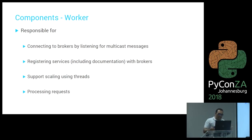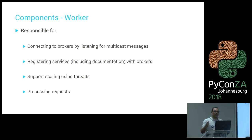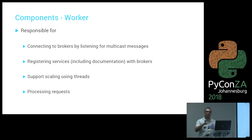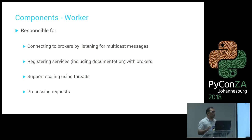We run on AWS and want to do auto-scaling and auto-descaling automatically. Workers can register services and documentation with the brokers. Apart from processing requests, we also wanted the worker to scale using threads — it's sometimes easier than using processes, especially when your workload has IO: connecting to databases, files, or making HTTP requests. In our environment, threads use a lot fewer resources than processes.